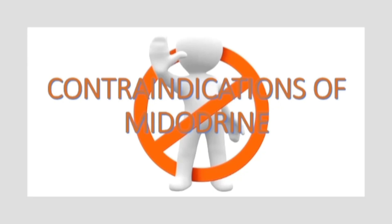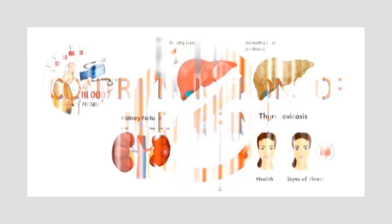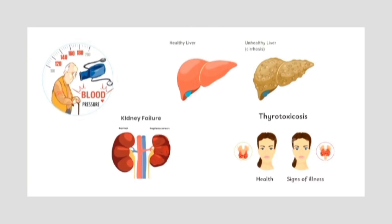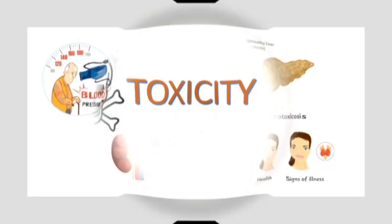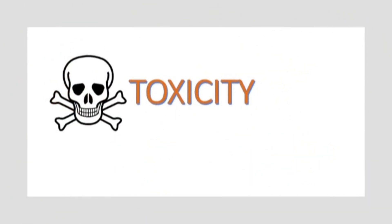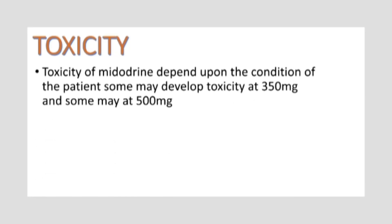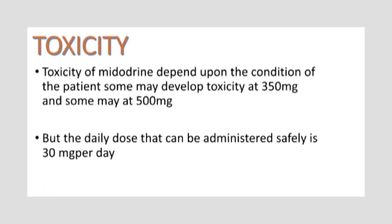Contraindications of midodrine — it should be avoided in the following conditions. It is severely contraindicated in heart diseases like myocardial infarction, because high blood pressure will worsen the condition. Its major metabolism occurs in the liver, so its use must be avoided in cirrhosis. As major excretion occurs through the kidney, it should also be avoided in kidney failure. Furthermore, it can exacerbate symptoms of thyrotoxicosis due to its sympathetic activity. Regarding toxicity, the toxic dose is not standardized and depends on the patient's condition — some may develop toxicity at 350 mg and some at 500 mg — so clinically, 30 mg per day is advised.